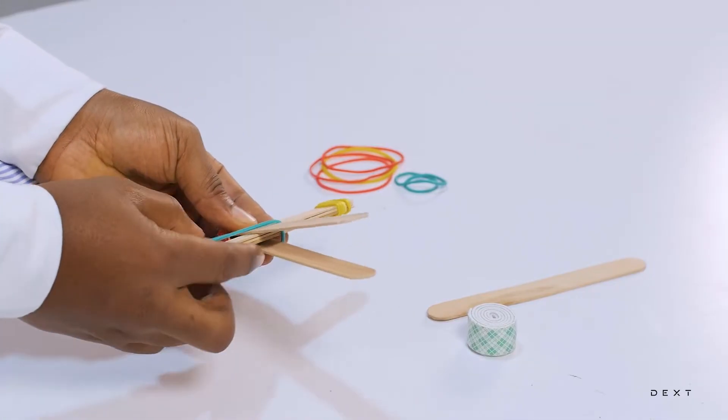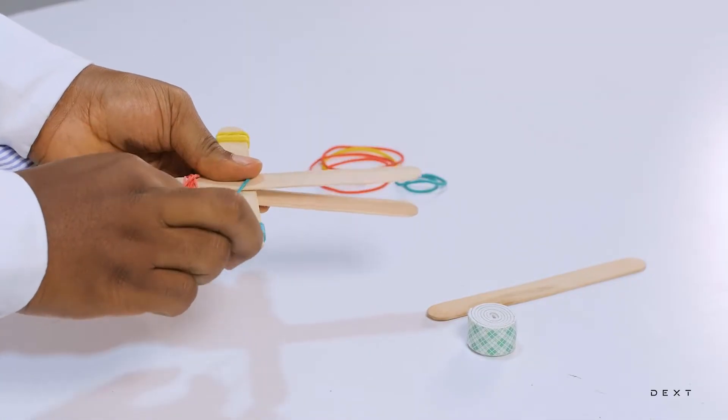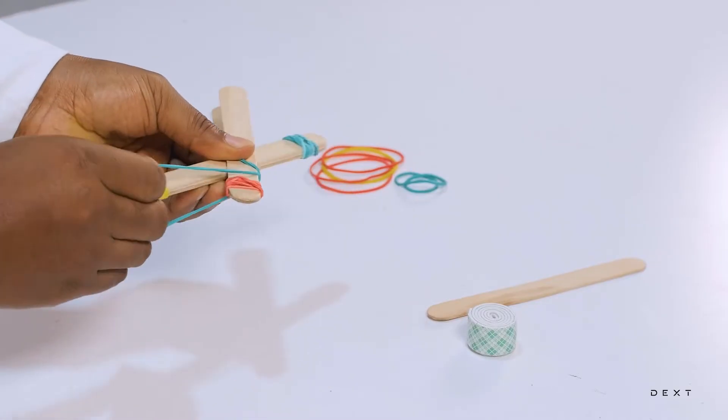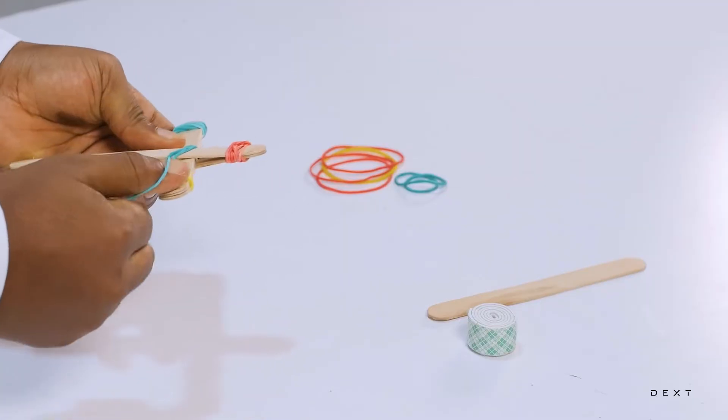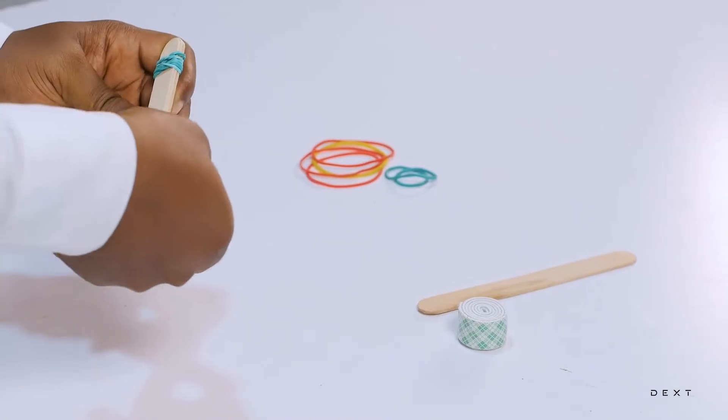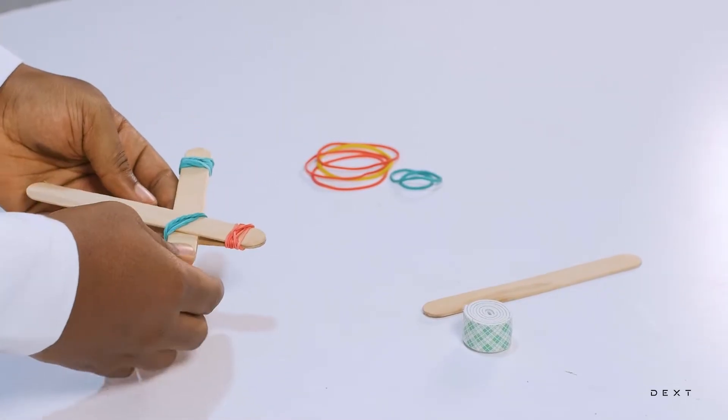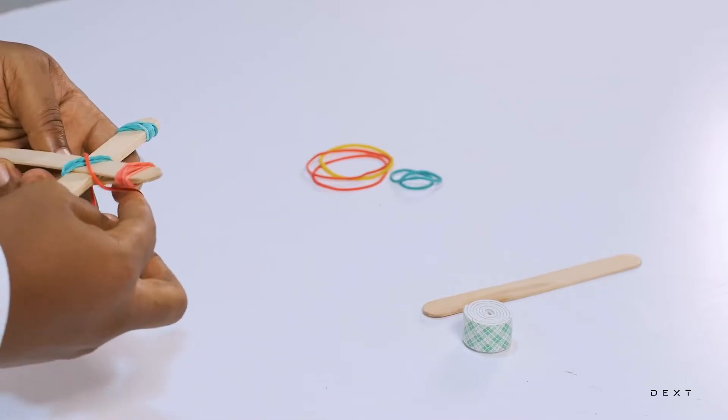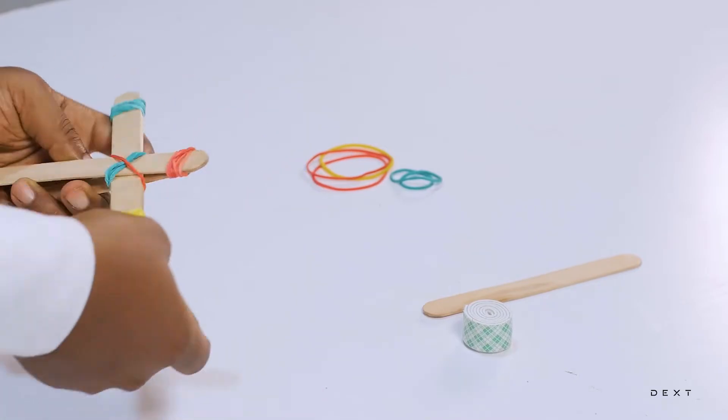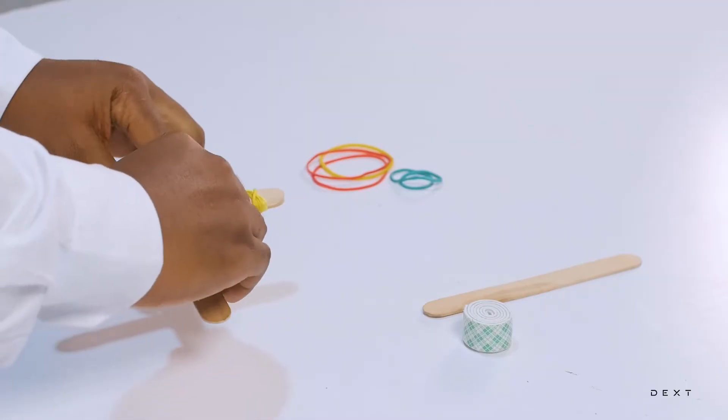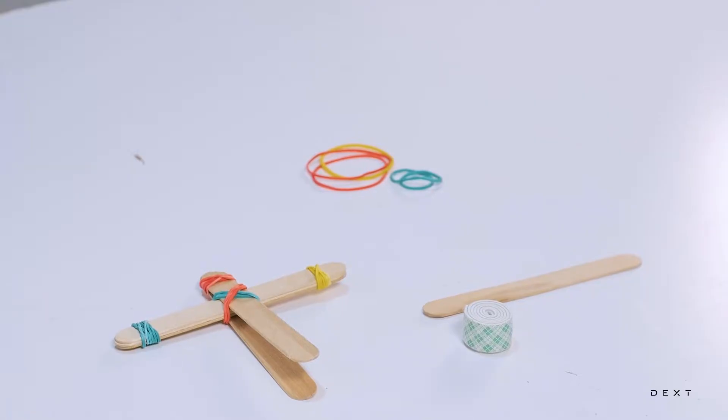We place the band around here like this. We are going to go over it a few times to make sure it is nice and tight. And we are going to do the same thing in the other direction. So, once you have this, you are essentially done with your catapult.